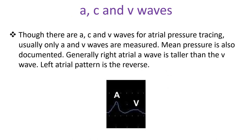Though there are A, C, and V waves for atrial pressure tracing, usually only A and V waves are measured. Mean pressure is also documented. Generally, the right atrial A wave is taller than the V wave, while the left atrial pattern is the reverse.